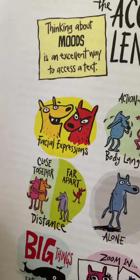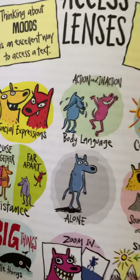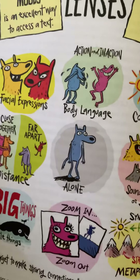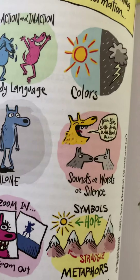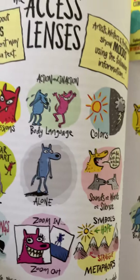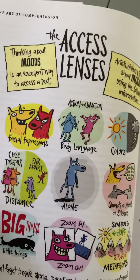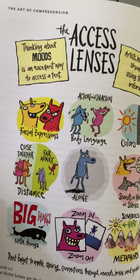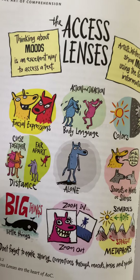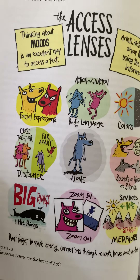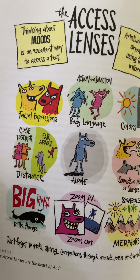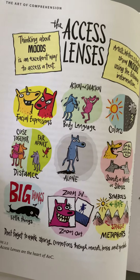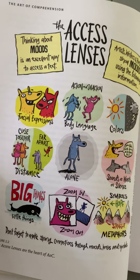And we have facial expressions, we have body language, colors, distance, the alone lens, sounds, words, or silence. We have these different lenses for kids to think about. And when they notice one of these lenses being used in a story, or in a picture, or in a video, an animation, a movie, it gives them a clue about what the mood might be.